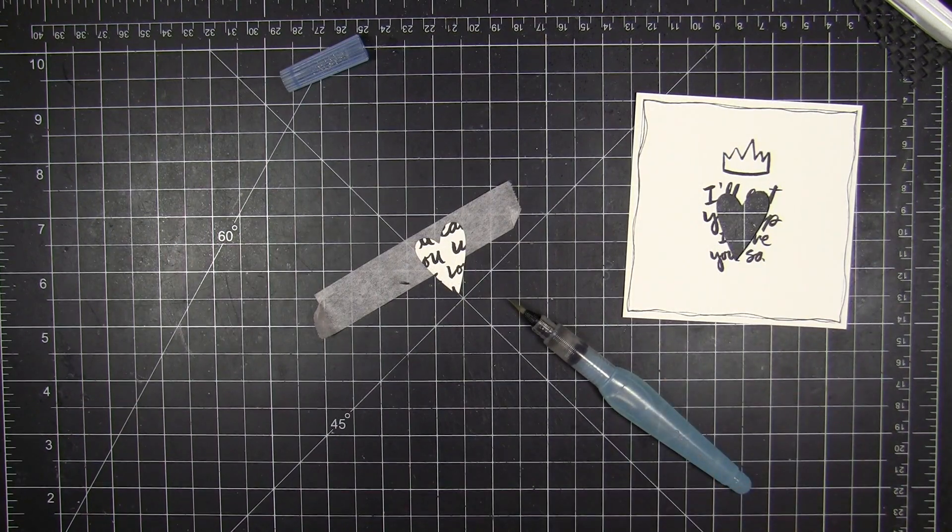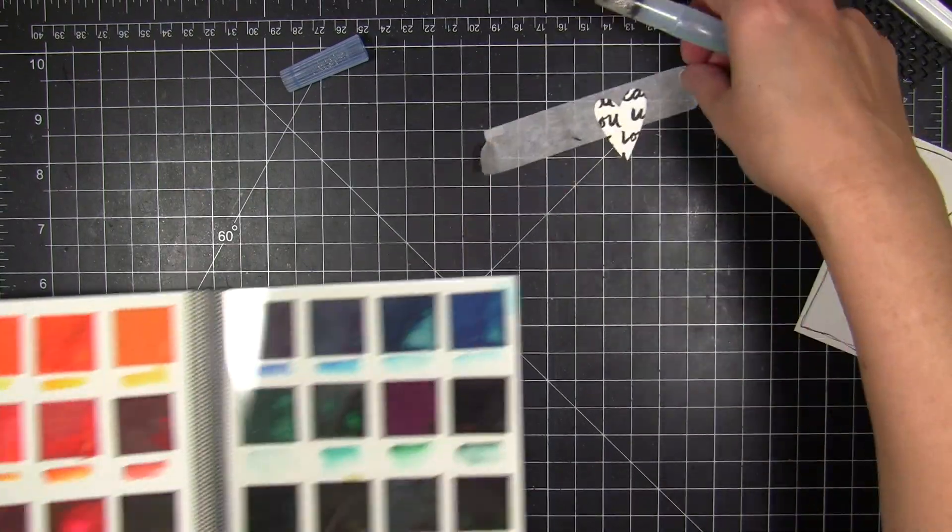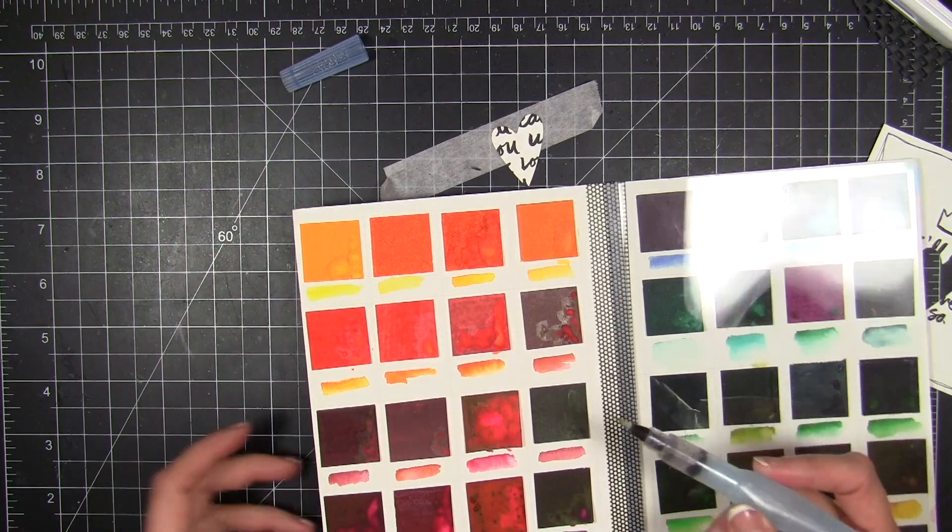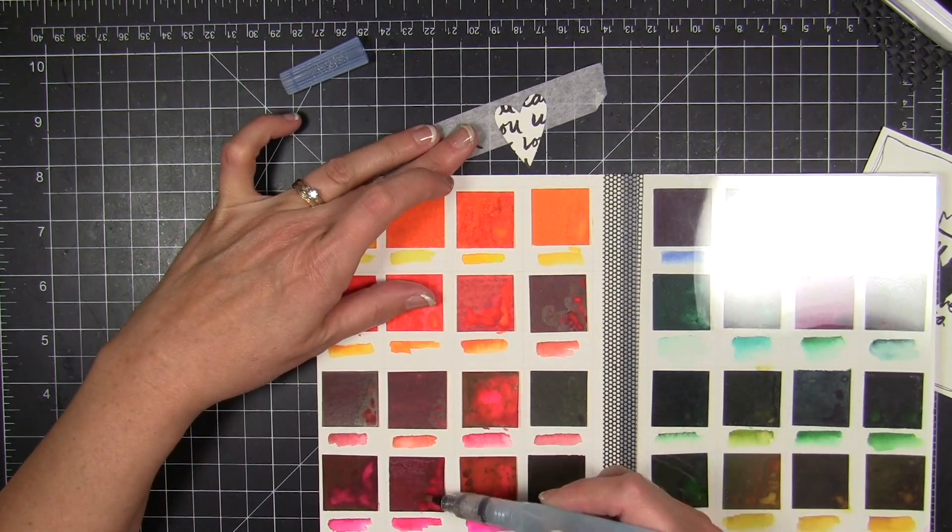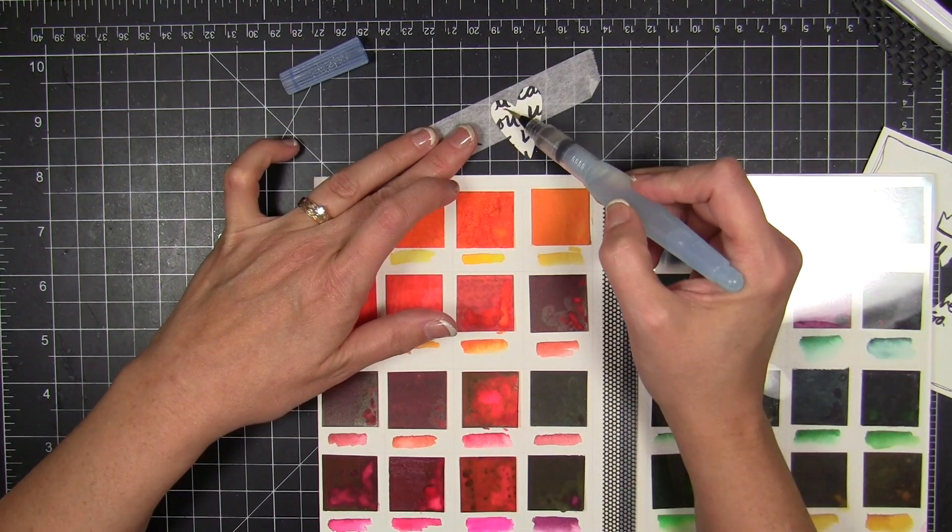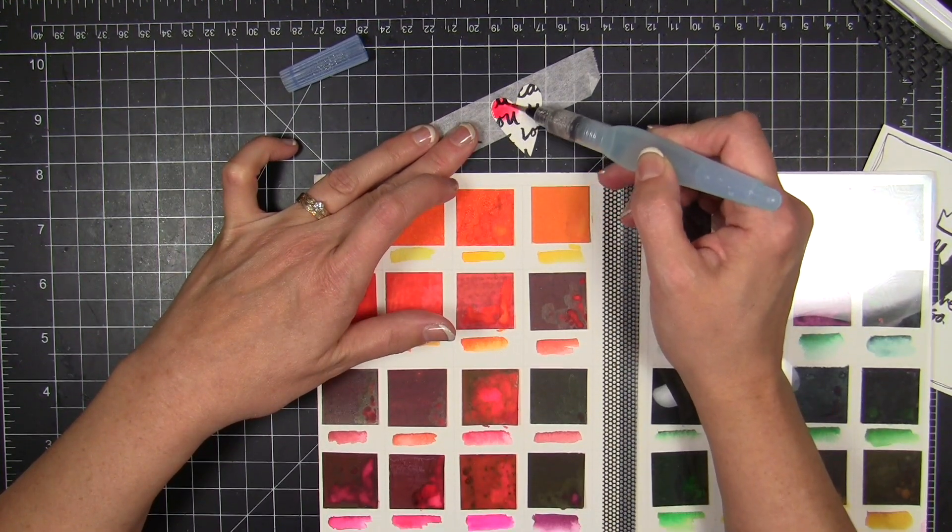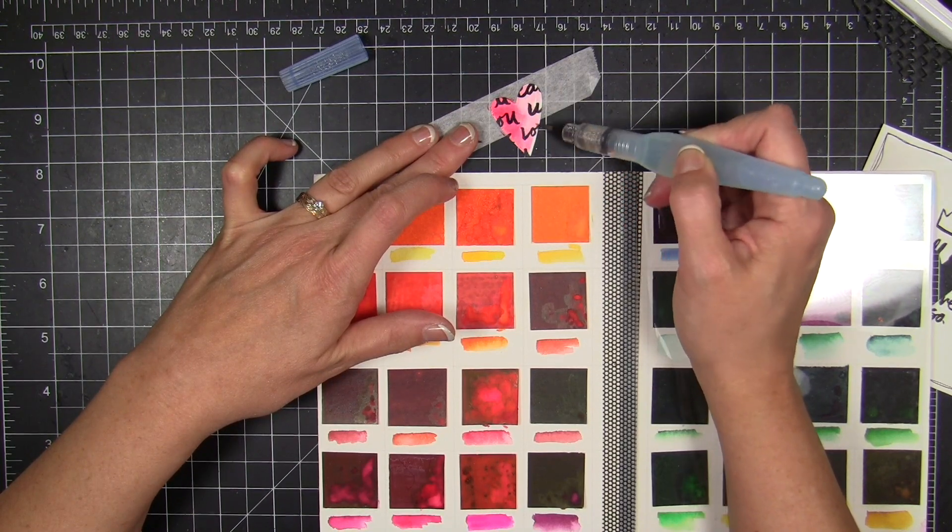I'm gonna take that folk heart die that I cut out. I tossed it into a bowl after I die cut it and set it aside. Now I'm gonna go ahead and take my Peerless watercolor palette to do some watercoloring with my Pentel Aquash. I'm just gonna quickly rub some of this pinkish-reddish color over the top, just do some super quick watercolor work.